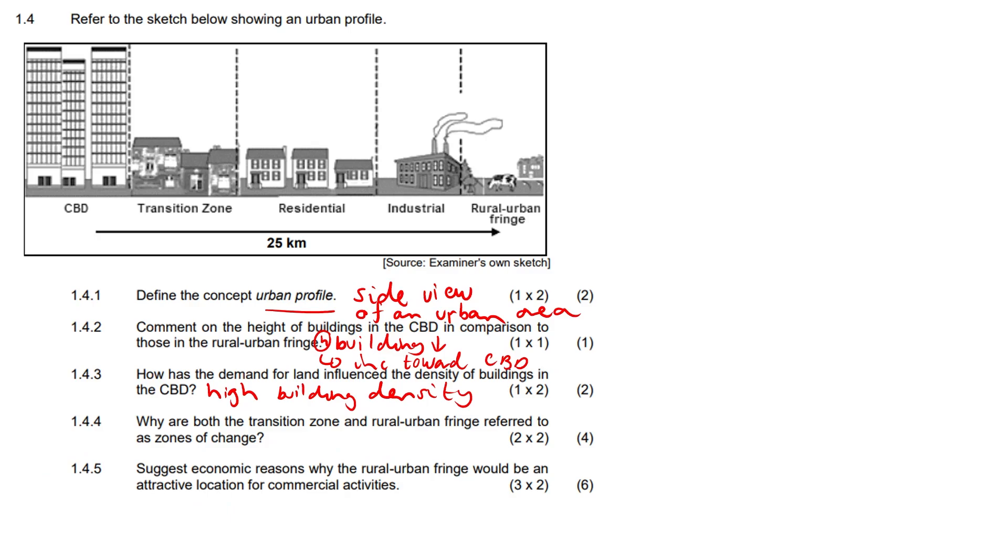1.4.4. Why are both the transition zone and the rural urban fringe referred to as zones of change? Tell me why. So firstly, it's characterized by mixed land use, if I could put it like that, or there's invasion and succession. You could even drop a couple of examples here, which would be relevant as well. Or in other words, urban renewal would occur, or there's going to be some level of urban expansion. So it's all about urban renewal and urban expansion.